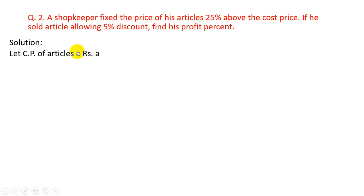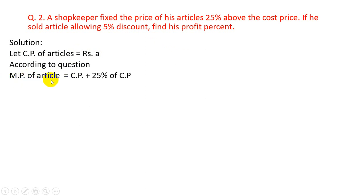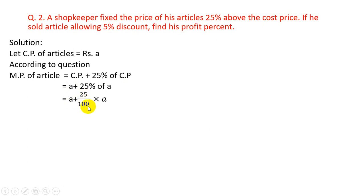Solution. Let CP of article = Rs.A. According to the question, MP of article = CP + 25% of CP, because MP is 25% above the cost price. So MP = A + 25% of A = A + 25/100 × A = A + A/4. Taking LCM, MP = 5A/4.